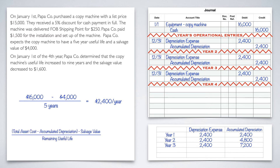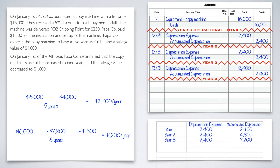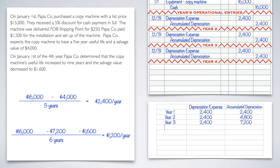Again, the formula is TAC minus accumulated depreciation minus the new salvage value, all over the remaining useful life. TAC is $16,000. Accumulated depreciation is $7,200 from our third year. Salvage value this time is the new one — $1,600. The new useful life is nine, we've already done three years, so we have six remaining. That gives us a depreciation expense of $1,200 per year. Year four is $1,200, adding that to the existing accumulated depreciation gives us $8,400. The journal entry still looks the same, but this time it's $1,200.